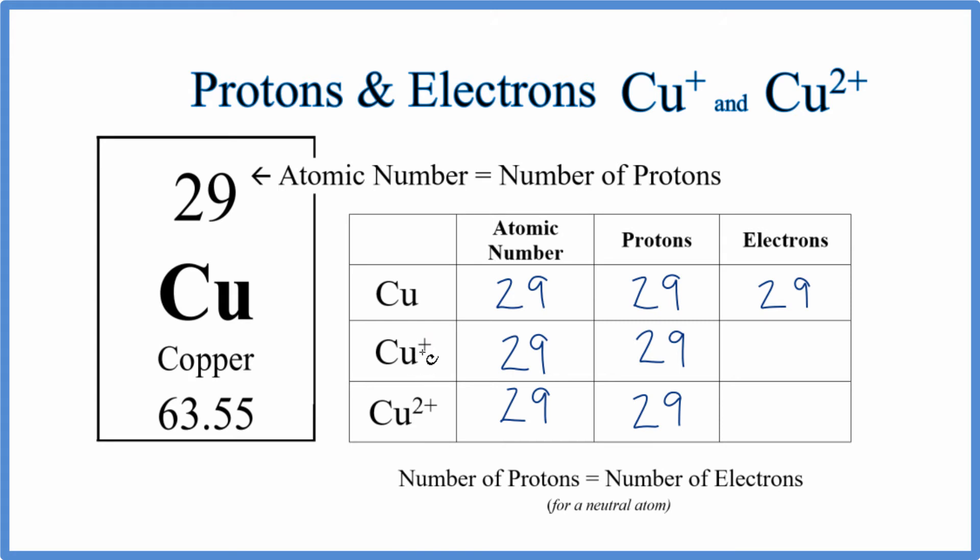When you lose an electron, it's negative. If you lose a negative charge, you're more positive. So instead of 29, we have 28 electrons.